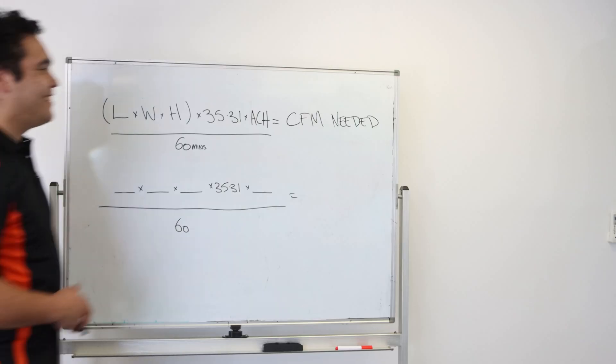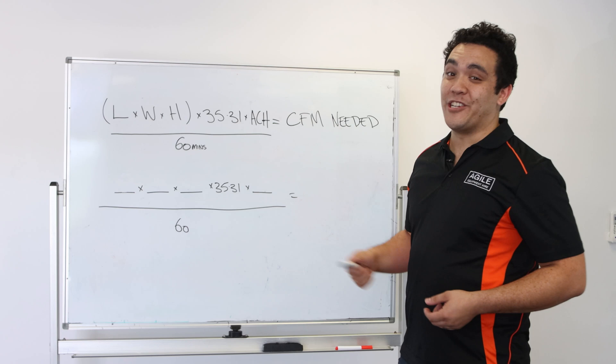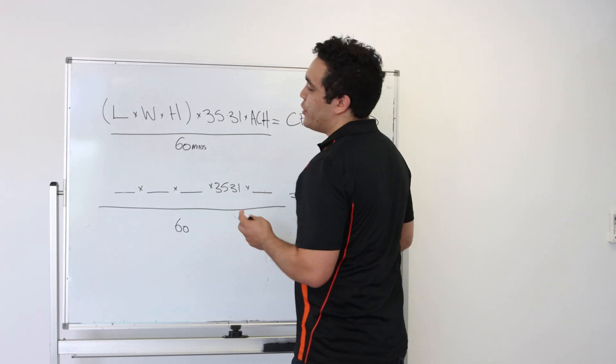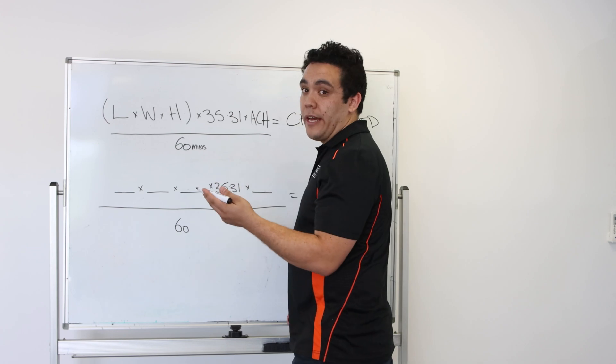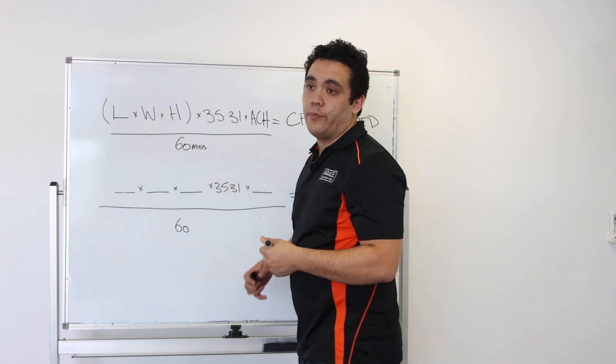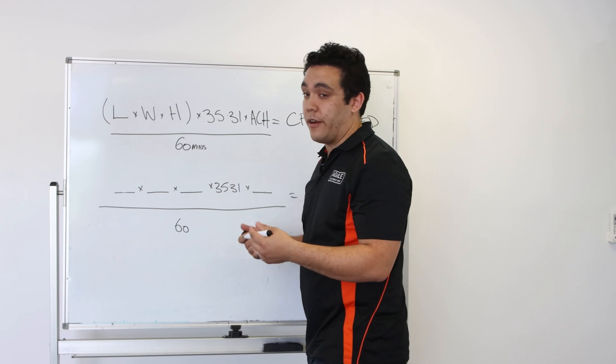Okay, now onto the math. So this is our equation here. First, you need to figure out the amount of air in the room, and you can do that by getting the total area of the room, the cubic area.